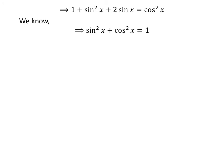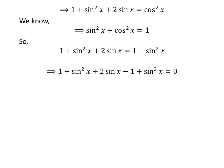We know the famous trigonometric identity: sine squared of x plus cosine squared of x is equal to 1. Applying this identity, we substitute cosine squared of x with 1 minus sine squared of x, giving us 1 plus sine squared of x plus 2 times sine of x is equal to 1 minus sine squared of x. Shifting the right-hand side to the left gives us 2 times sine squared of x plus 2 times sine of x is equal to 0.